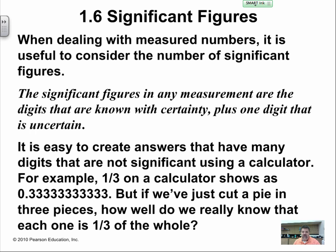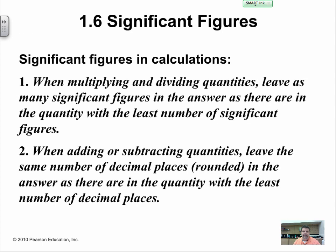But if we just cut a pie into three pieces, how well do we really know that each one is one third of the whole? This is due to human error. We have a certain level of certainty versus uncertainty.